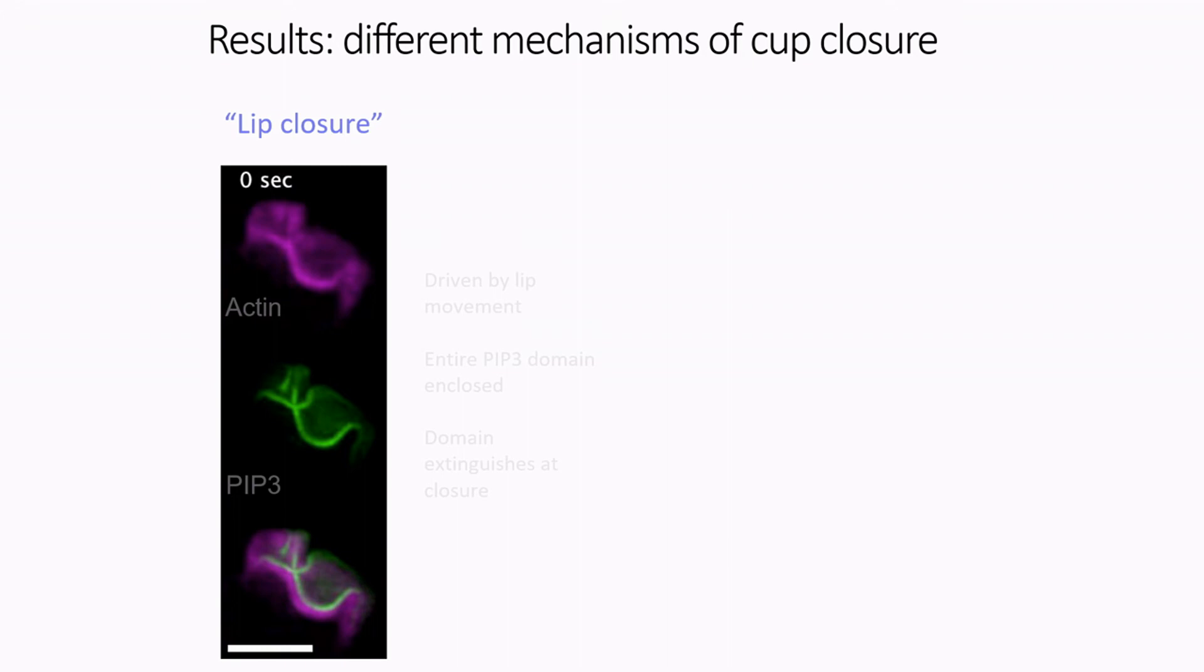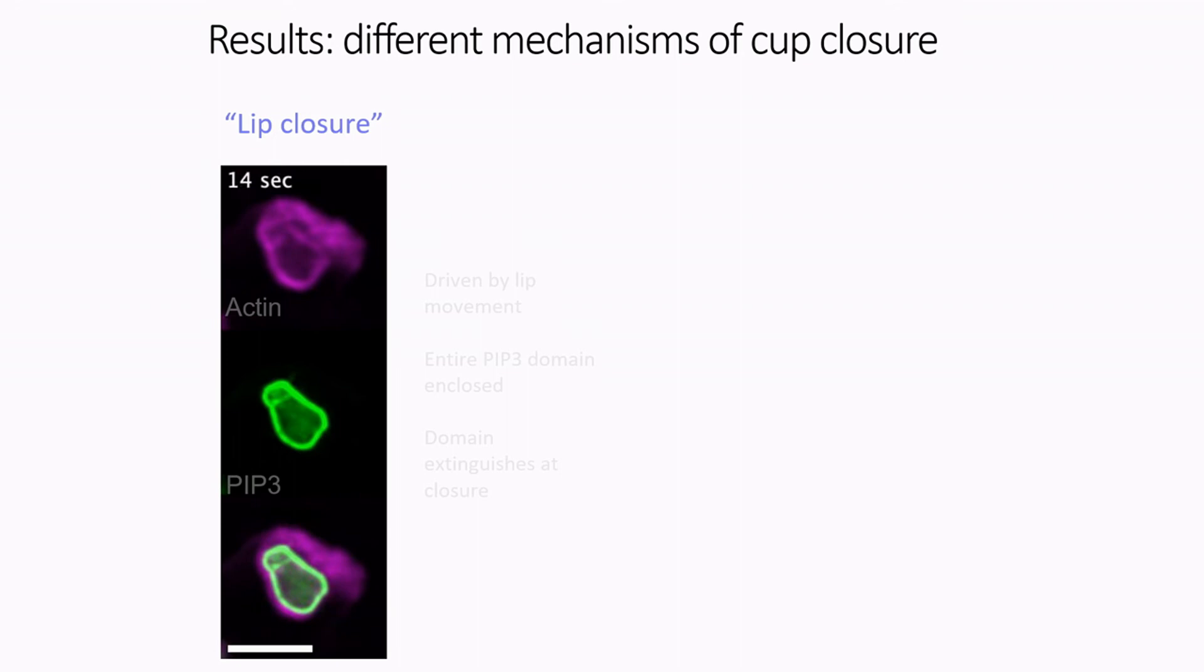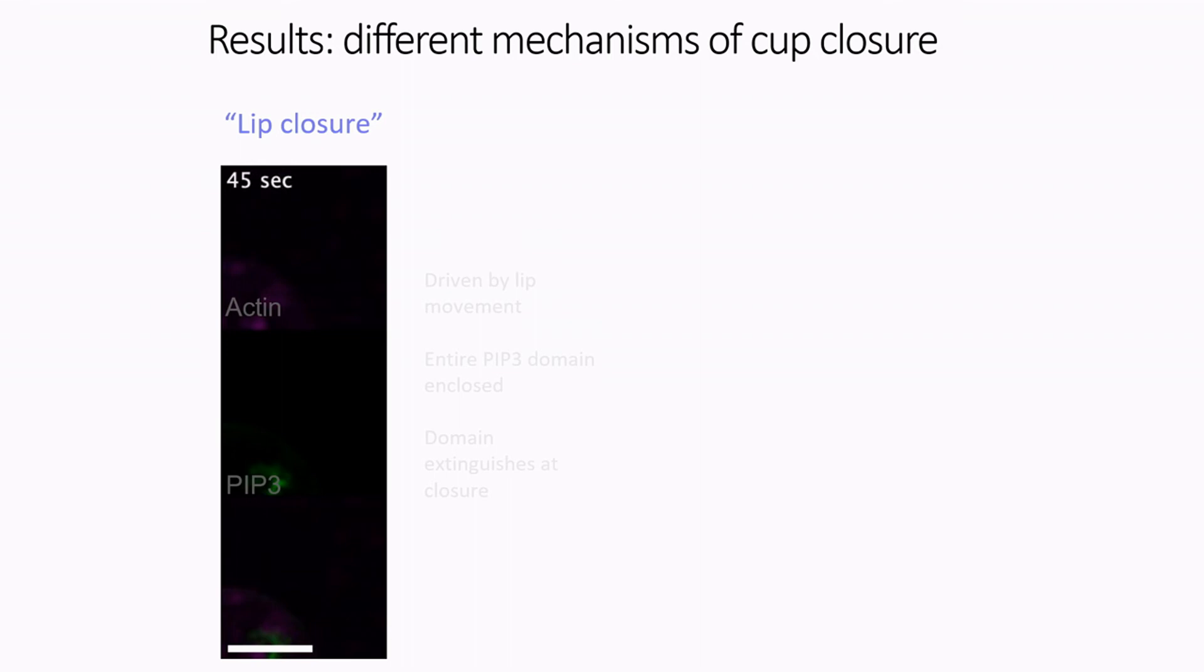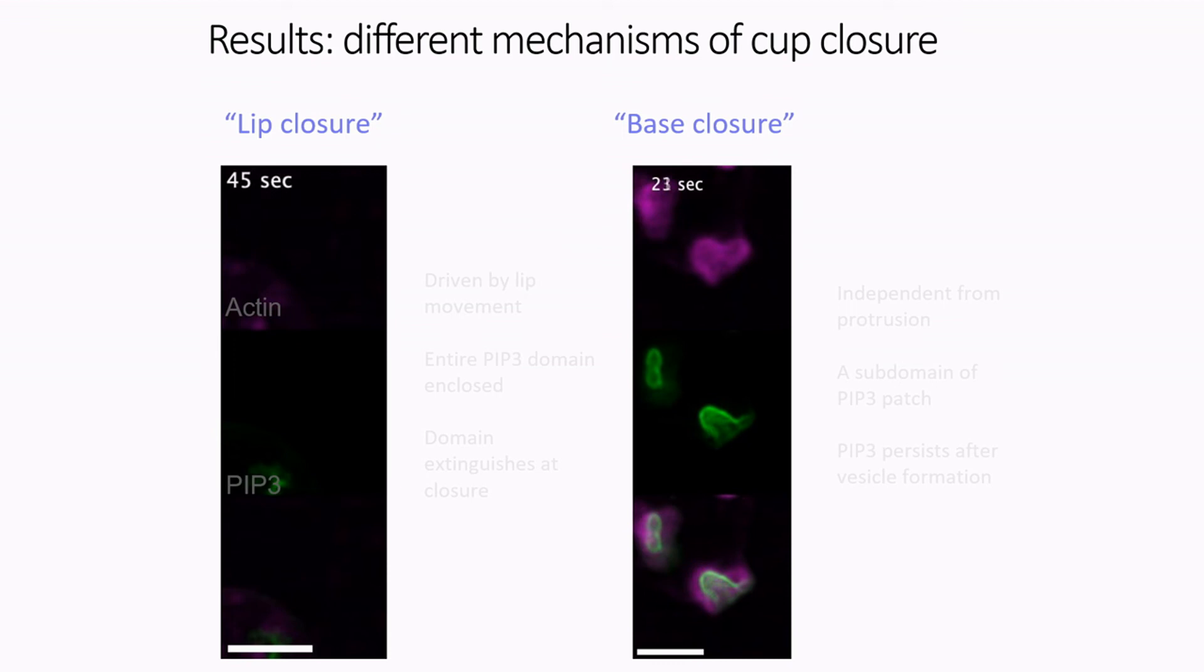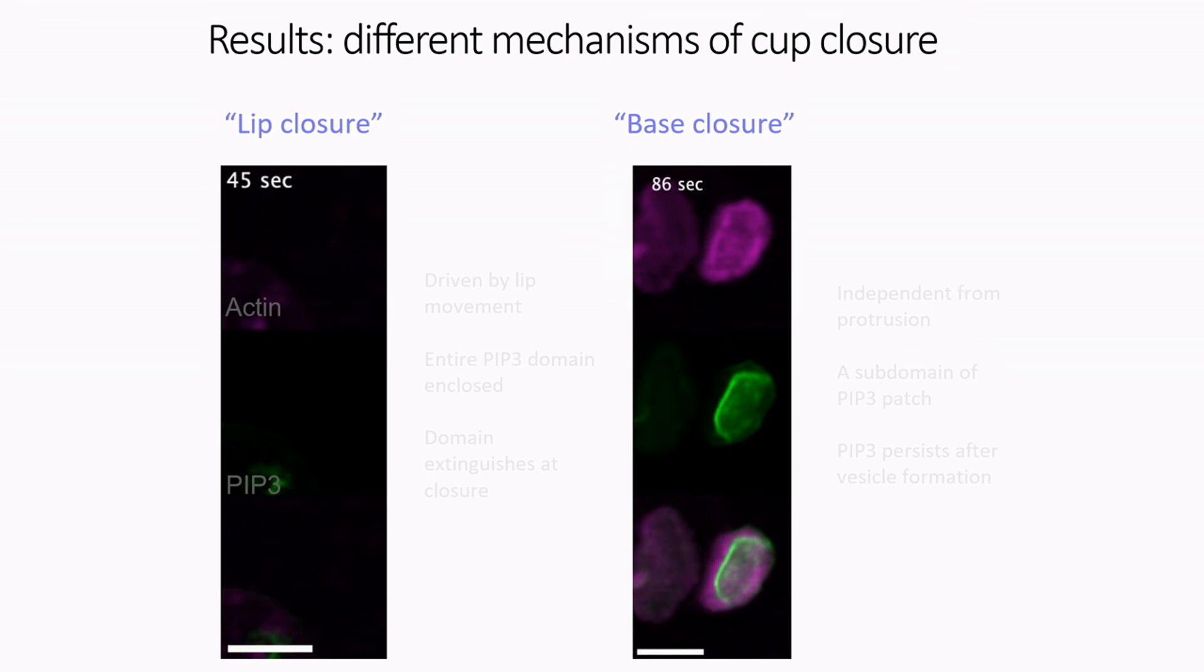Now the last result I want to show is, this is more of a qualitative result that I'll just mention briefly, is that we have two forms of closure. So lip closure, we have this sort of inward motion at the lip which forms the vesicle and pulls in. Then we have base closure where we actually see just these vesicles budding off at the bottom. And I'm just explaining this briefly because we also...